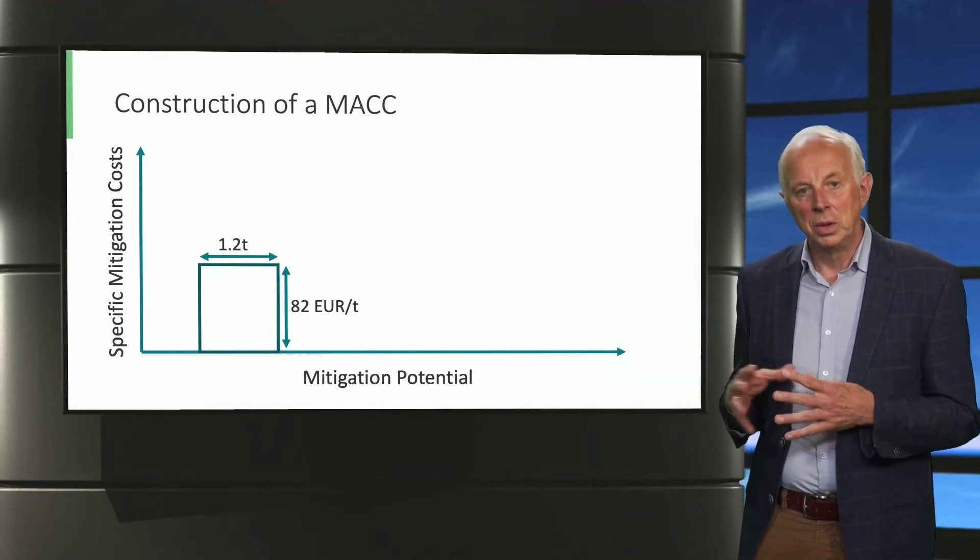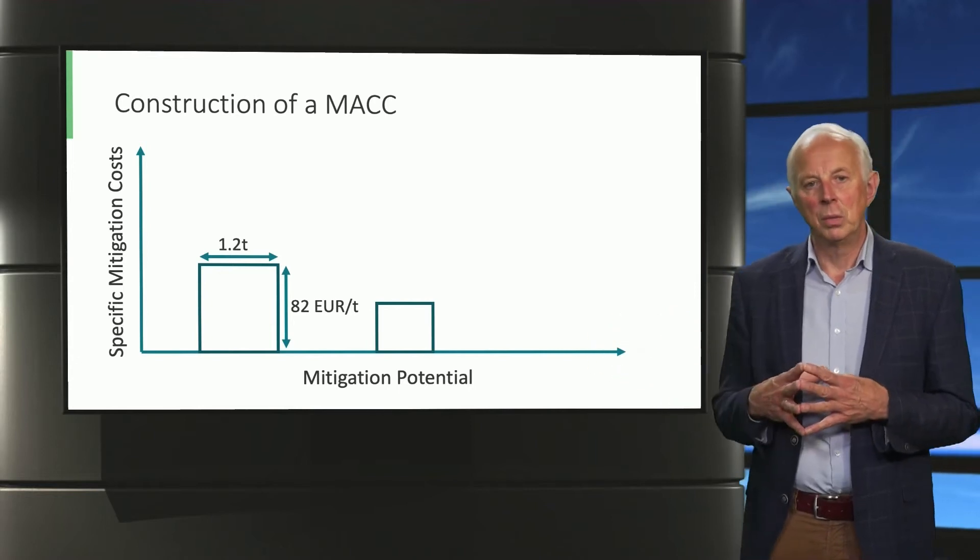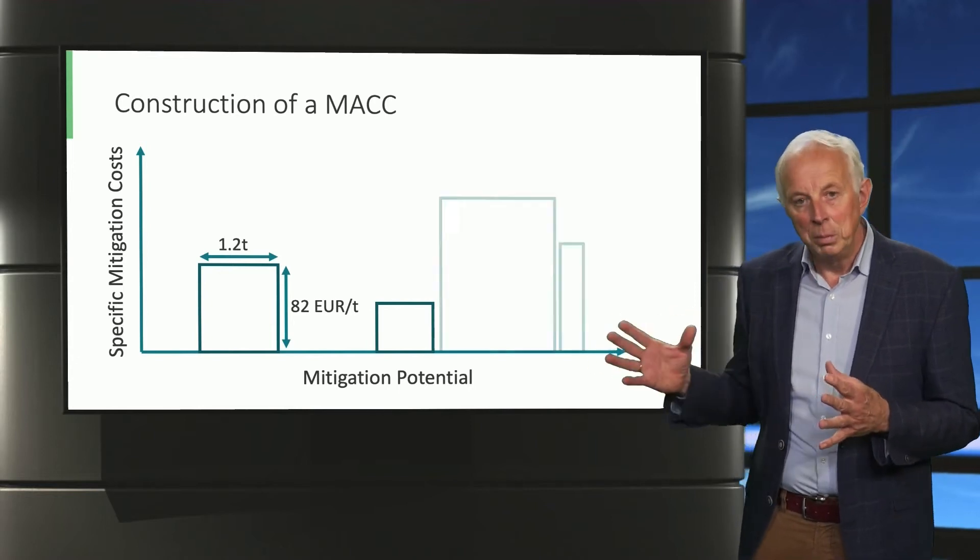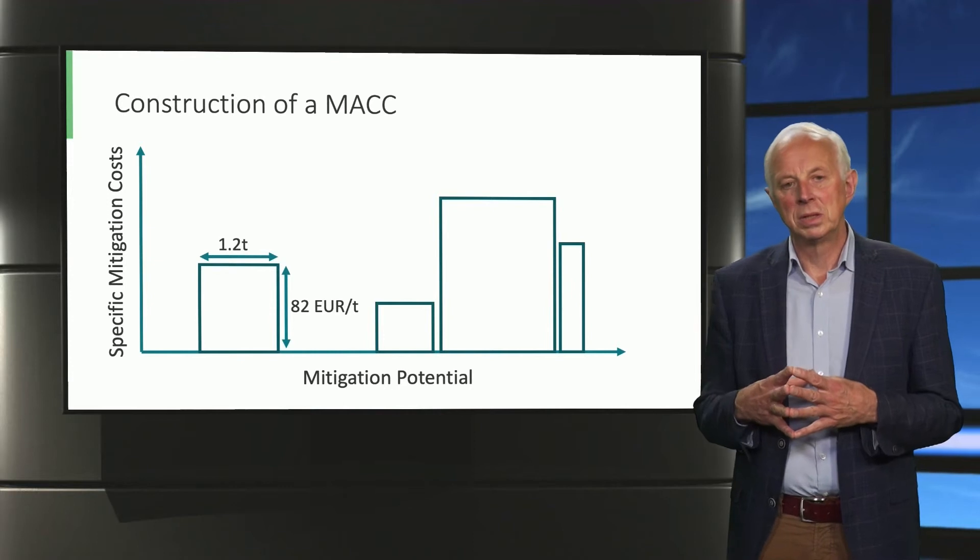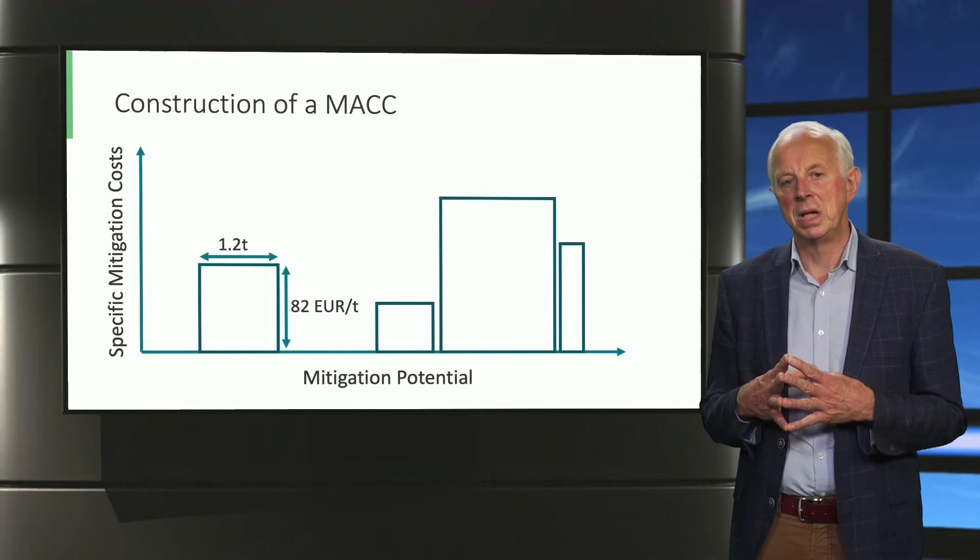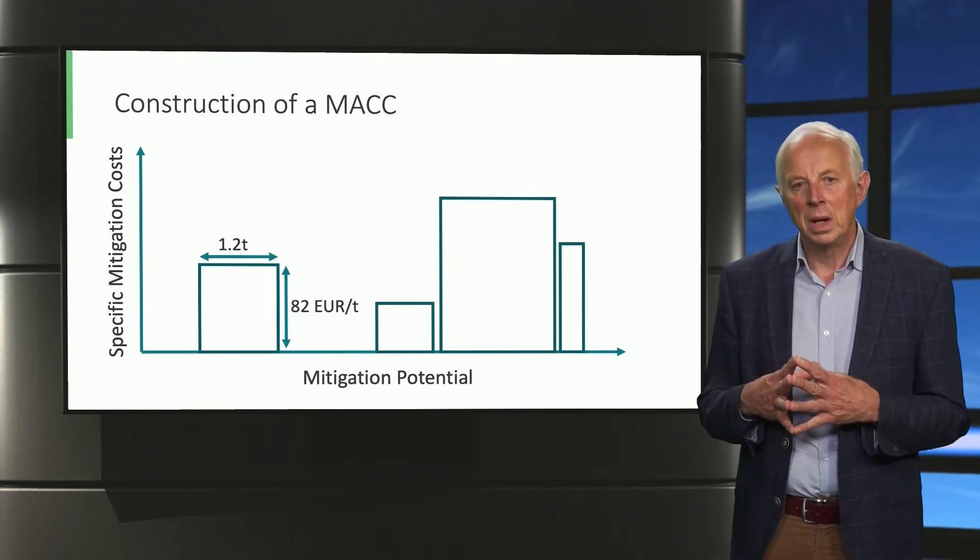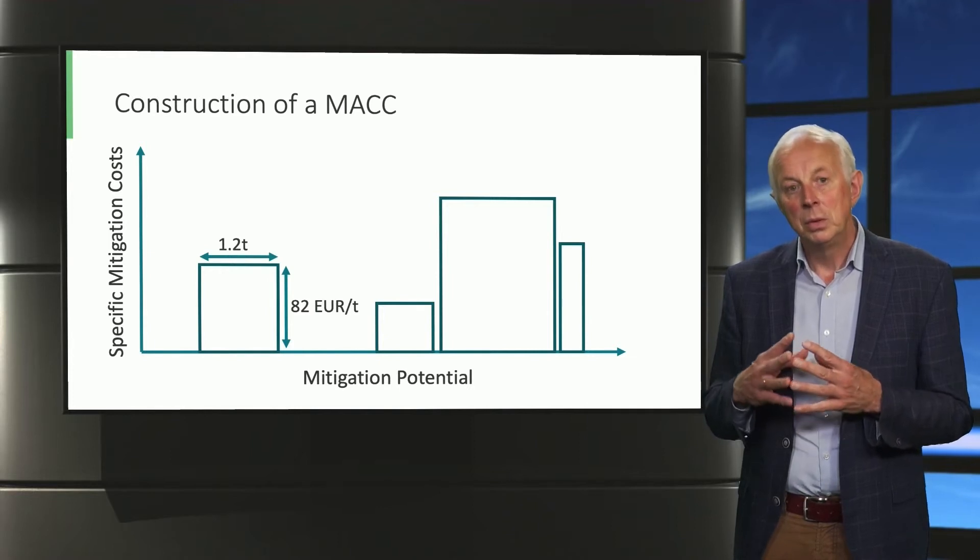But there will be other options to reduce CO2 emissions, for example this one with somewhat lower costs. And there will be more with varying potentials and varying costs. Each of them can in the same way be represented by a rectangle.